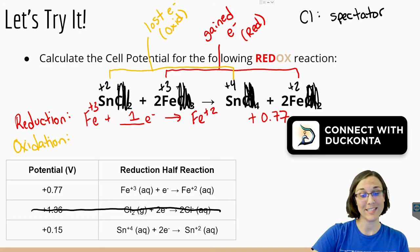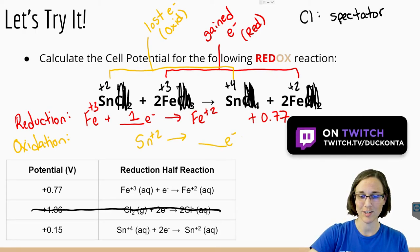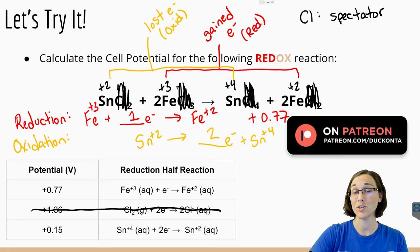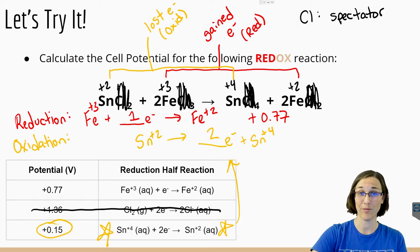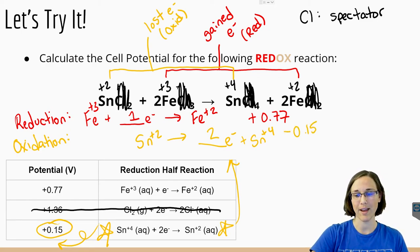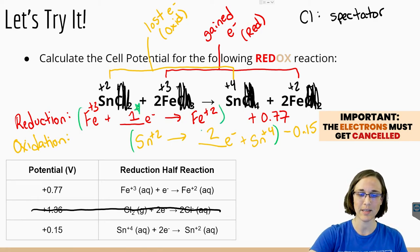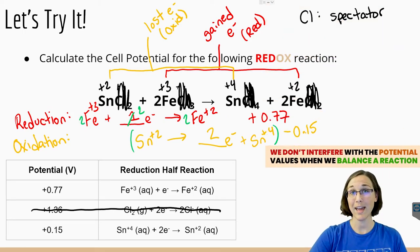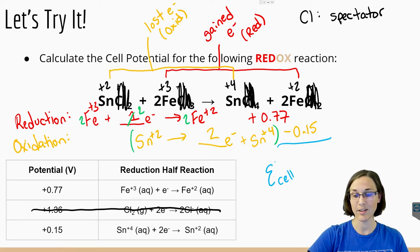Now for the oxidation half, which is all about tin: Sn²⁺ had to lose some number of electrons in order to become a plus four charge. To go from plus two to plus four, we must have lost two electrons. Looking at our table, we notice that this is exactly the reverse of what we were given, so we can't use the positive value — we have to flip this around, which gives us negative 0.15. Before we add those two numbers together, let's make sure our electrons actually cancel. There's only one here and two here, so we need to multiply the top equation by two — giving us two electrons, two irons on each side. We do not multiply the cell potential value by two; we leave those values alone. When we add these together, we get a cell potential of plus 0.62 volts.